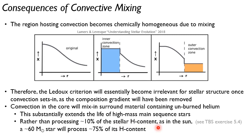So what do I mean by that? For the sun, we kind of showed in exercise 5.4 that in the sun, you're going to burn around 10% of the stellar hydrogen content is going to be processed in nuclear burning. When you go to a much higher mass star, like a 60 solar mass star,